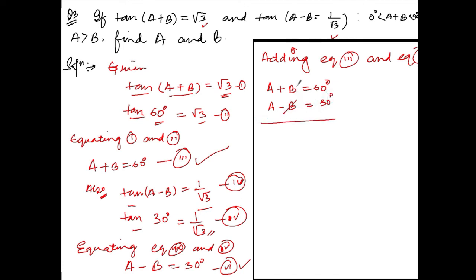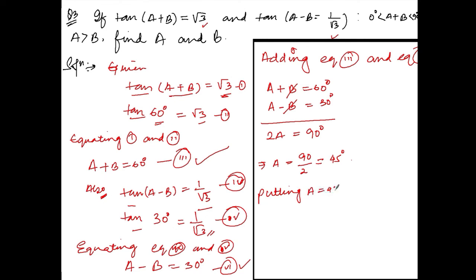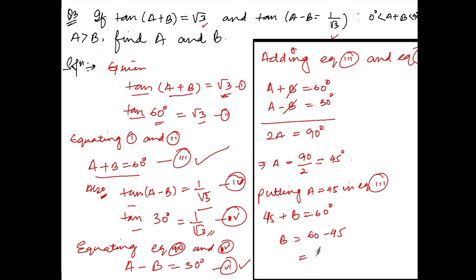So a = 90/2 = 45°. Now putting a = 45° in equation 3: 45 + b = 60°, so b = 60 - 45 = 15°.